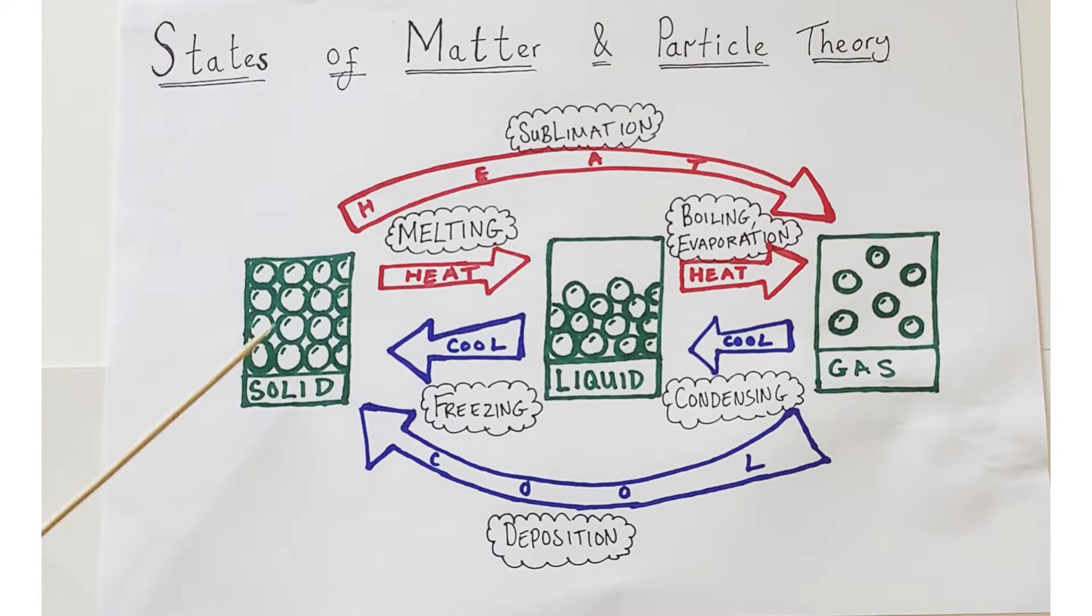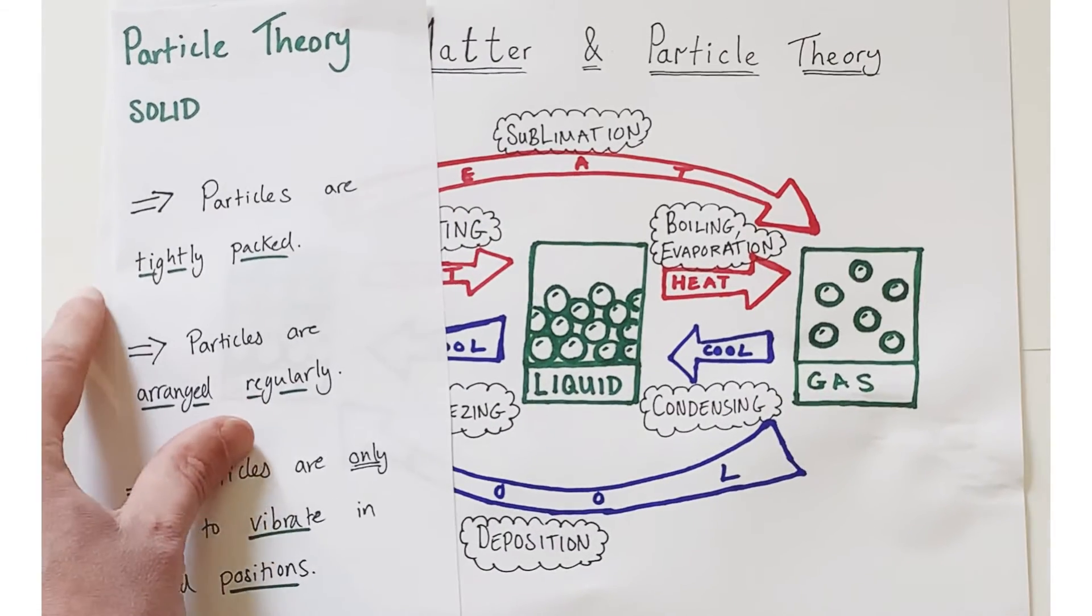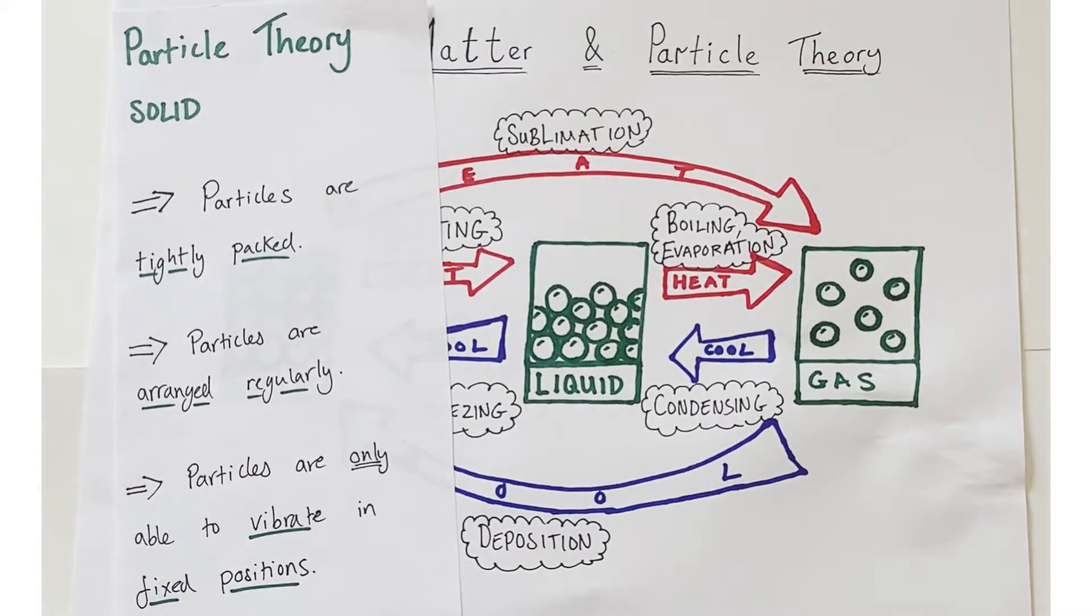I want to really focus on how particle theory helps to describe exactly what's going on in a solid. So the key thing when you're talking about particle theory is do mention the word particle as much as possible. So explaining the arrangement and movement of particles in a solid. The first thing to note is that the particles are very tightly packed.